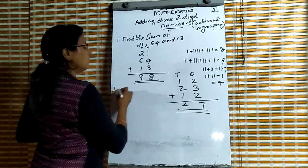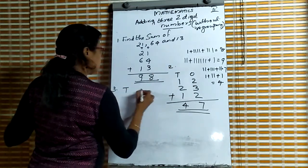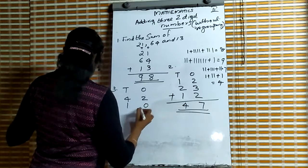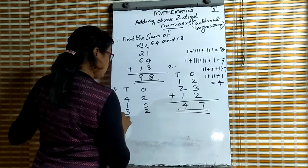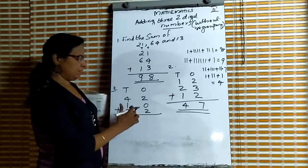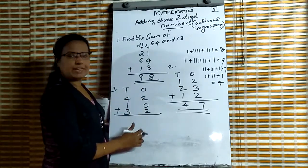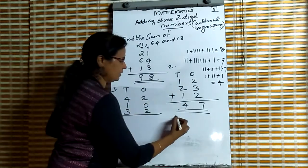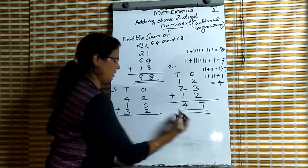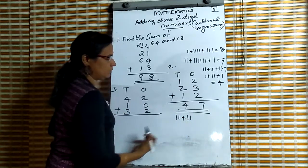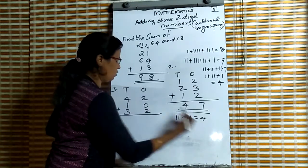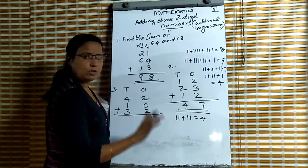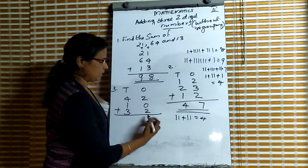Third question: 42 plus 10 plus 32. First, we add the digits in the ones place. The digits in the ones place are 2, 0, 2. Any number added to 0 gives the number itself. So 2 plus 0 plus 2 equals 4.